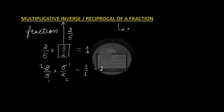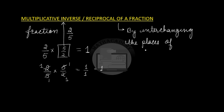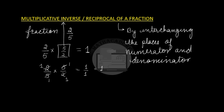So the multiplicative inverse — how do we obtain it? It is obtained by interchanging the places of numerator and denominator of the given fraction, and it is also known as the reciprocal of a fraction.